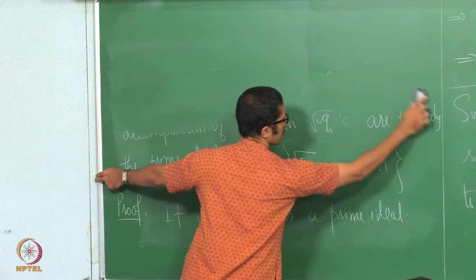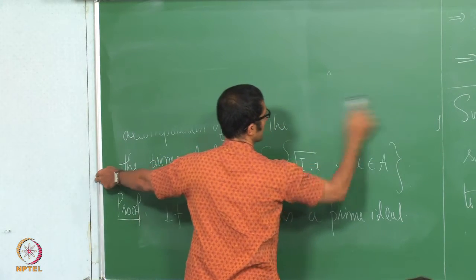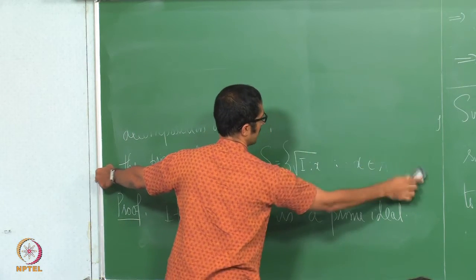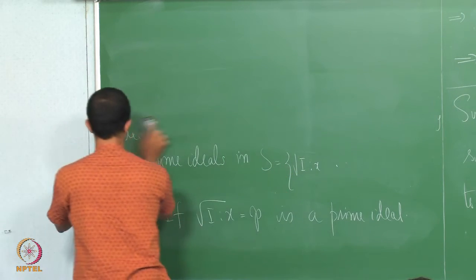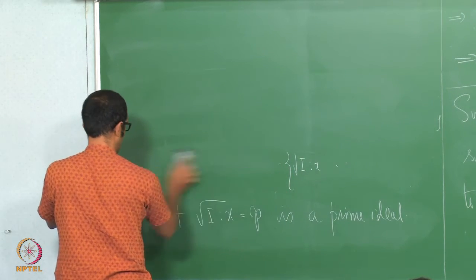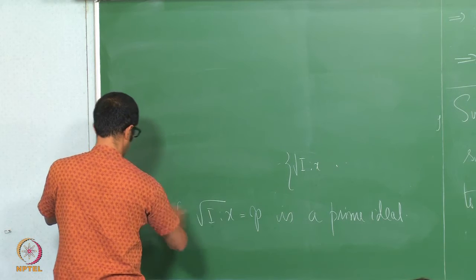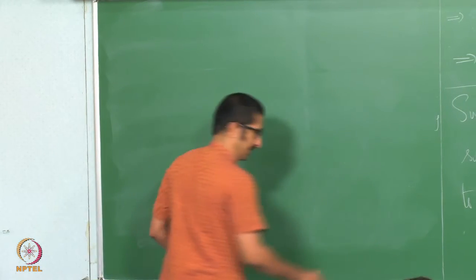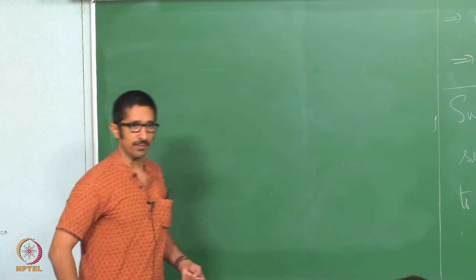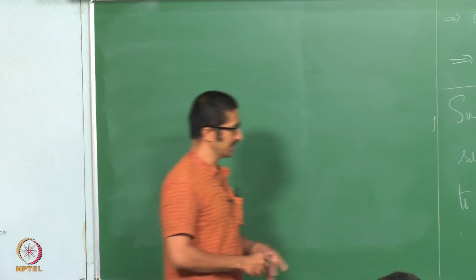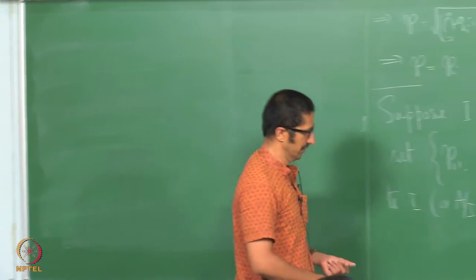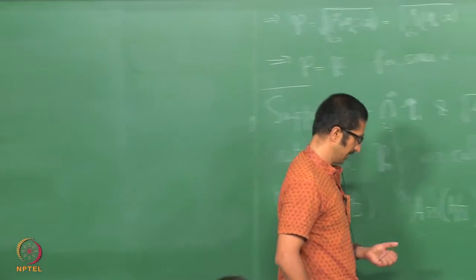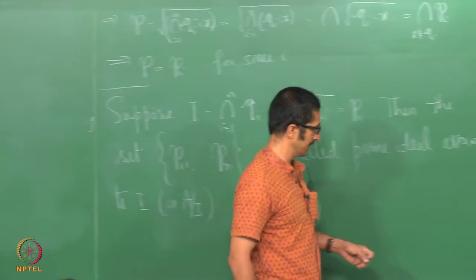When we take an ideal, that corresponds to a variety in the corresponding polynomial ring, in the corresponding affine space.